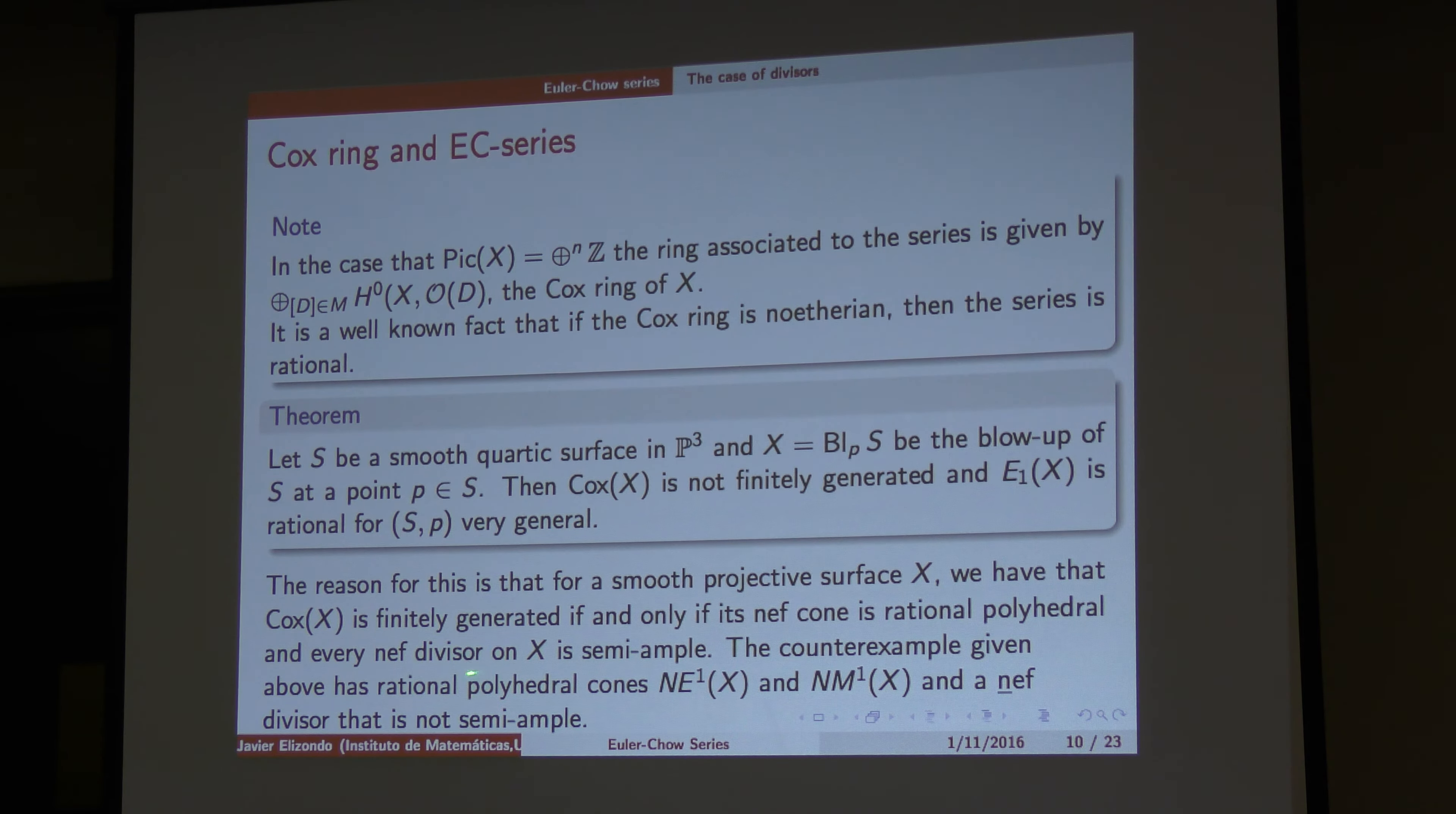And this example of that doesn't happen. The cone is very nice, it's rational polyhedral, but there are many divisors of the Chow that are not semi-ample. So, the Cox ring is not finitely generated.